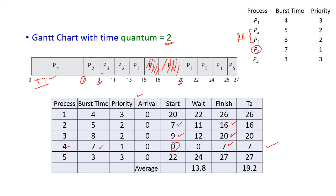P1 and P5 have the same priority. By implementing round robin, P1 and P5 will execute alternatively in the CPU. The starting time of P1 is 20 and the finish time of P1 is 26. P5 will start at 22 and P5 will finish at 27.